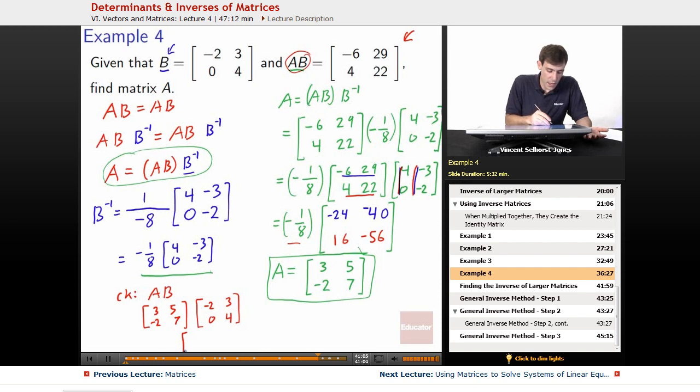we work this out. The 3, 5 on -2, 0, that's going to get us -6. 3, 5 on 3, 4, oh, I'm sorry. Not 6, but -6. 3, 5 on 3, 4 is going to get us 9 plus 20, so 29. -2, 7 on -2, 0 is going to get us -2 times -2, positive 4. And -2, 7 on 3, 4. -2 times 3 gets us -6. 7 times 4 gets us 28. Add those together, you get 22.